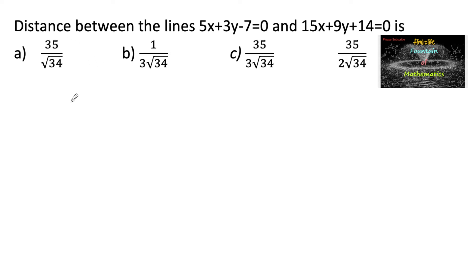The distance between the lines 5x plus 3y minus 7 equals 0 and 15x plus 9y plus 14 equals 0.